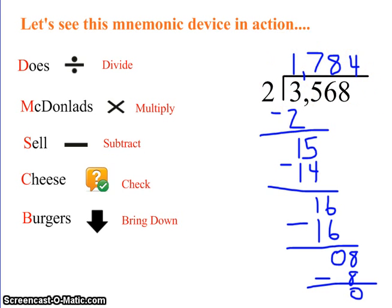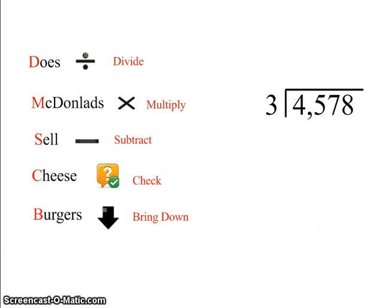Okay, let's try another one. All right. So let's start with divide. 3 goes into 4 how many times? It goes once. 1 times 3 is 3.